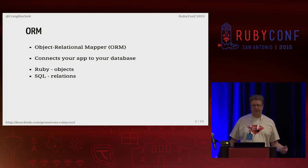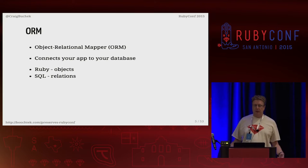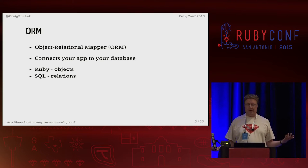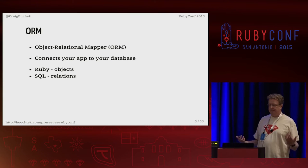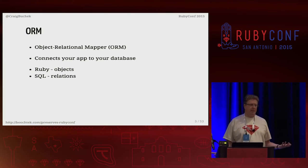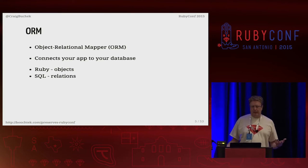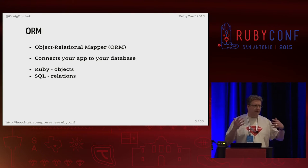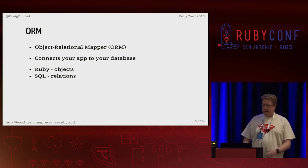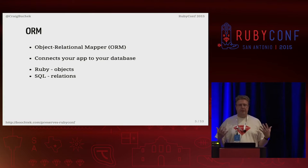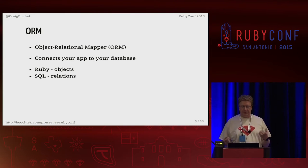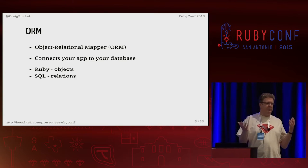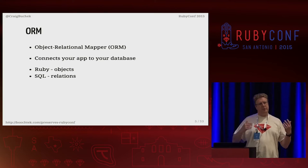I want to make sure we know what an ORM is. An ORM is an object-relational mapper. An SQL database deals with relations — there's something called relational algebra — and Ruby deals with objects. Those two sides work differently, and an ORM brings them together. There are some caveats, including what people call an impedance mismatch, because things don't always work the same.